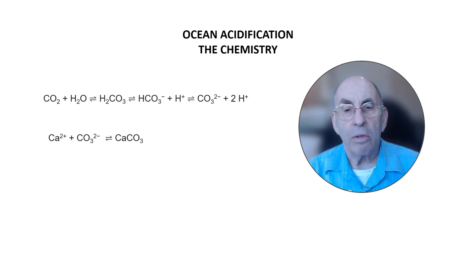Notice that the arrows in the first equation go in both directions. This is because the reactions can go either way depending on local physical conditions, including temperature and ocean currents, as well as the local chemistry of the seawater, which contains a host of different compounds and ions.